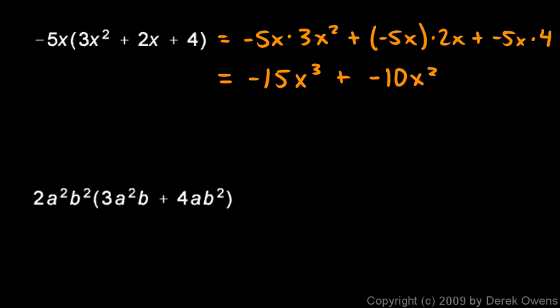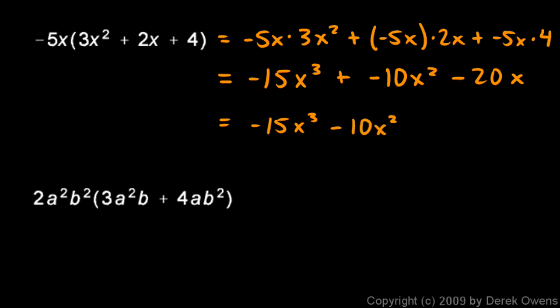For the last term, negative 5 times 4 gives negative 20, so that term is minus 20x. The full answer is negative 15x cubed minus 10x squared minus 20x. All three terms have different variable parts, so none of them can be combined as like terms.